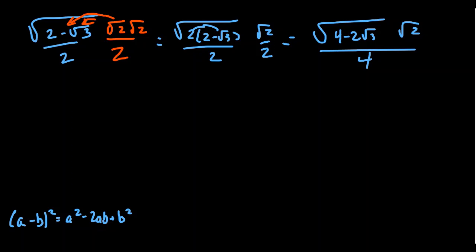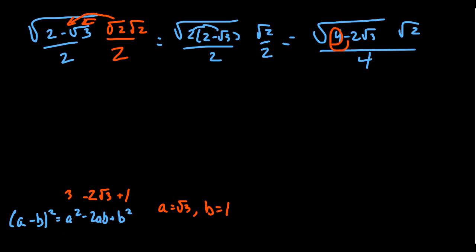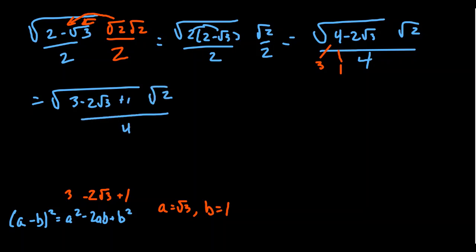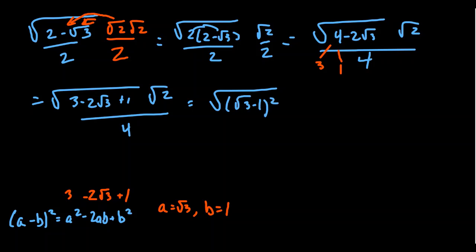Now with the new radicand 4 minus 2 times root 3, we compare it to a squared minus 2ab plus b squared. Setting A equal to root 3 and B equal to 1, we need A squared which is 3, and B squared which is 1. Indeed, 4 breaks up as 3 plus 1, giving us root 3 squared minus 2 times root 3 times 1 plus 1 squared. So we can factor 4 minus 2 root 3 as (root 3 minus 1) squared, and the full expression becomes the square root of (root 3 minus 1) squared times root 2 over 4.